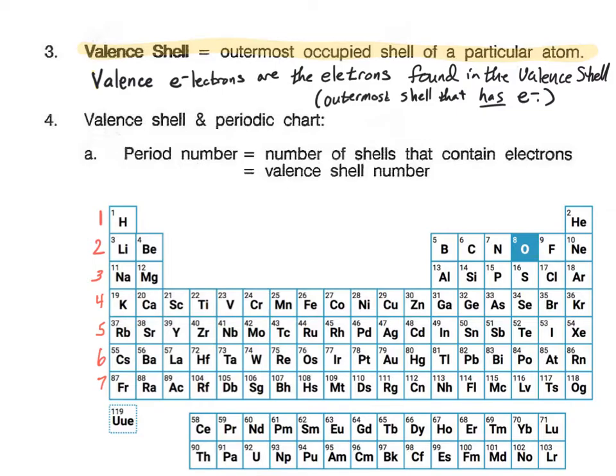So if we look at tin, we can see that it is in the fifth period. So it has five as its valence shell. It will have electrons in shells one, two, three, four, and five.